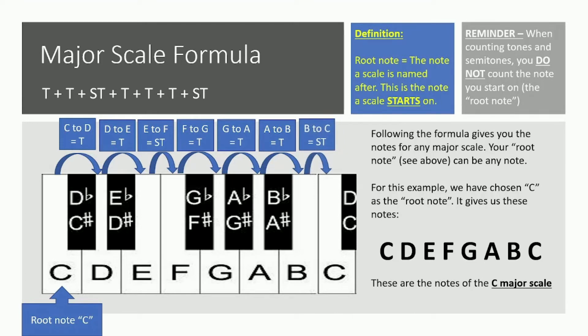So as you can see we went following this formula: T plus T plus T as in tones, then up a semitone, then up a tone, up a tone, up a tone, then a semitone. That took us from C the root note to D to E to F to G to A to B to C.